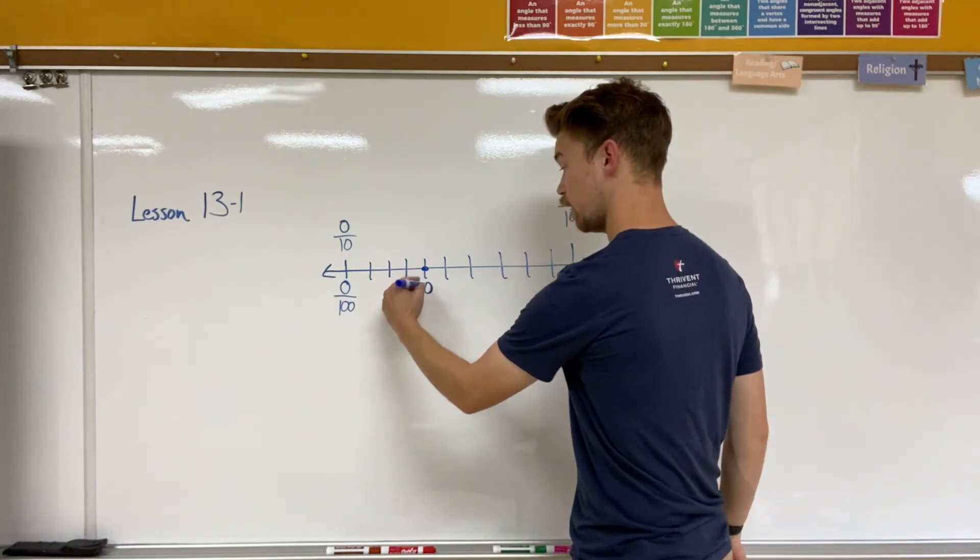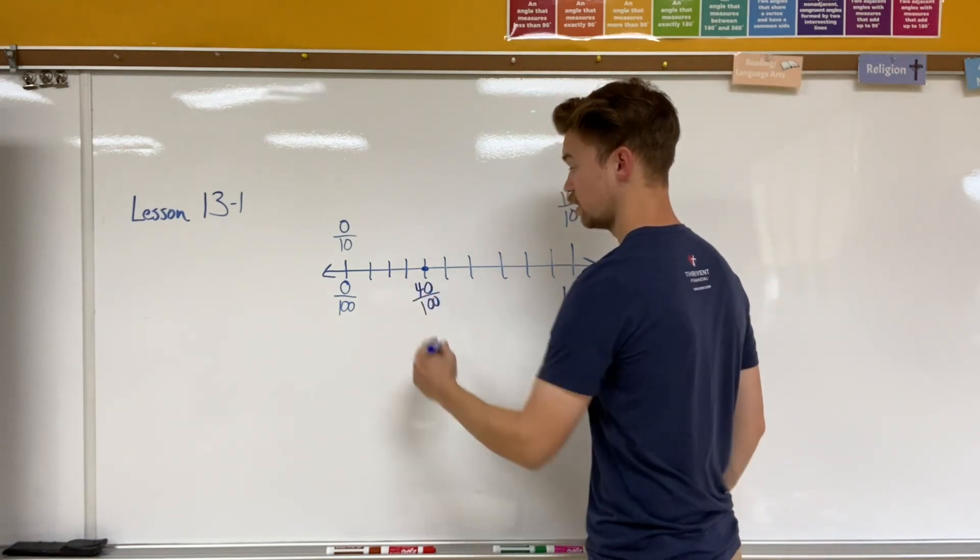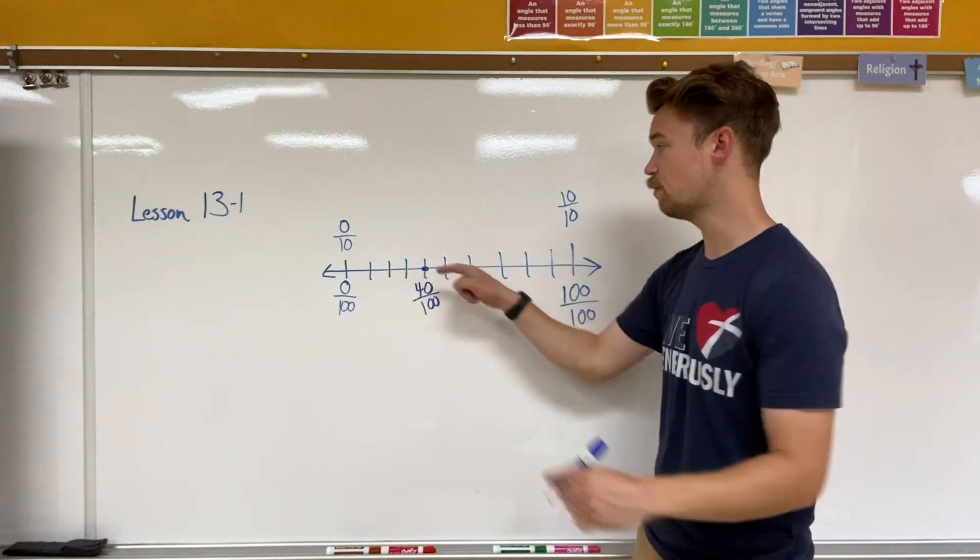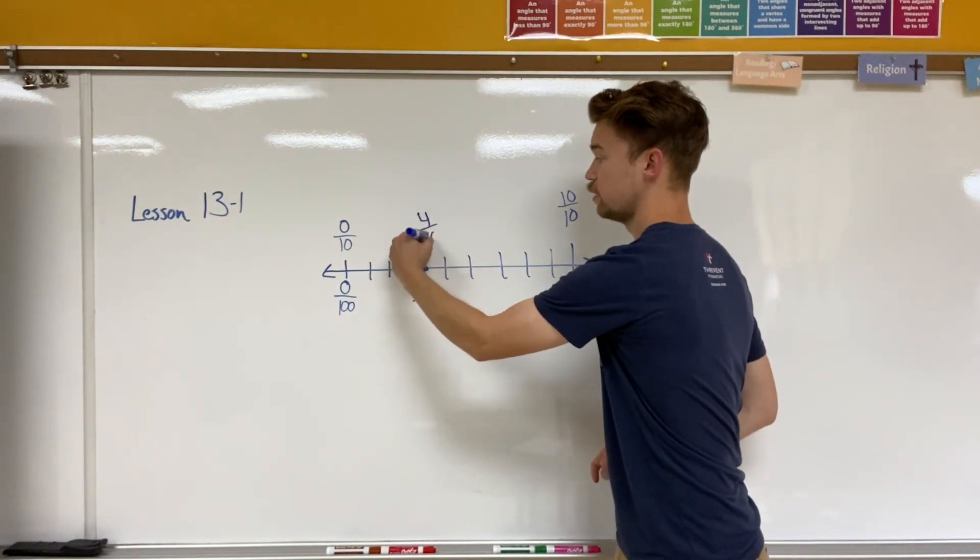Yeah, it would be forty hundredths. And what would it be in tenths? One, two, three, four. Four tenths.